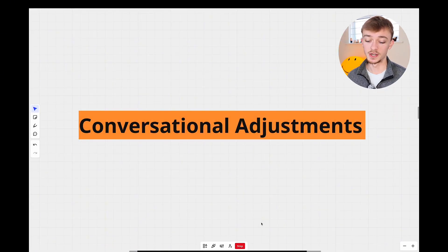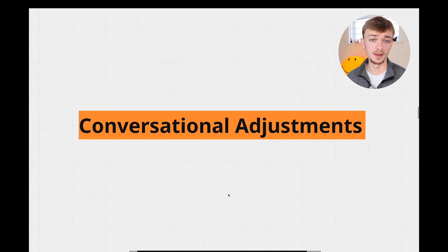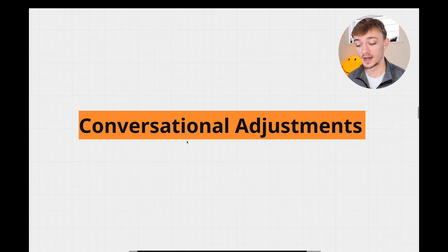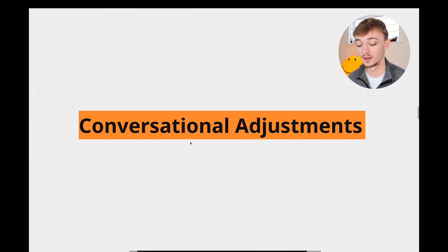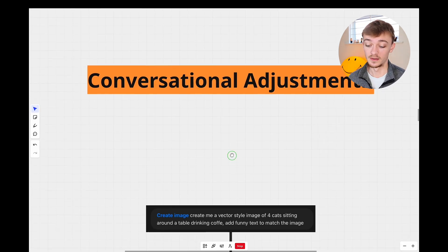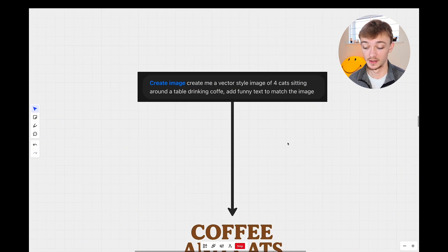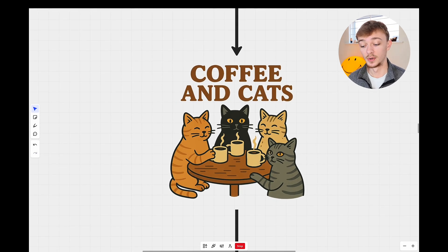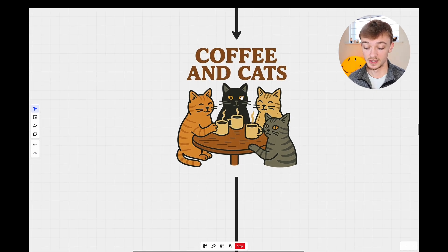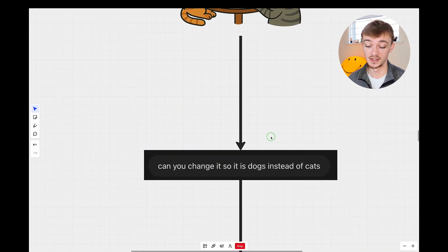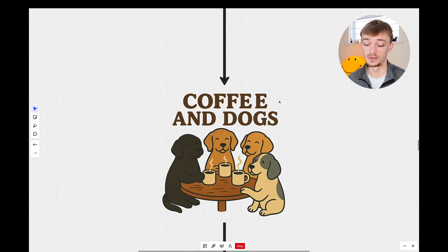Now I want to show you how you can use conversational adjustments to change an image you've generated with ChatGPT. A lot of people think you need a brand new prompt and a brand new image if there's a mistake, but you don't. I asked it to create a vector style image of four cats sitting around a table drinking coffee, add funny text to match the image. Then I said can you change it to dogs instead of cats — and it changed them to dogs and also altered the text to be relevant.